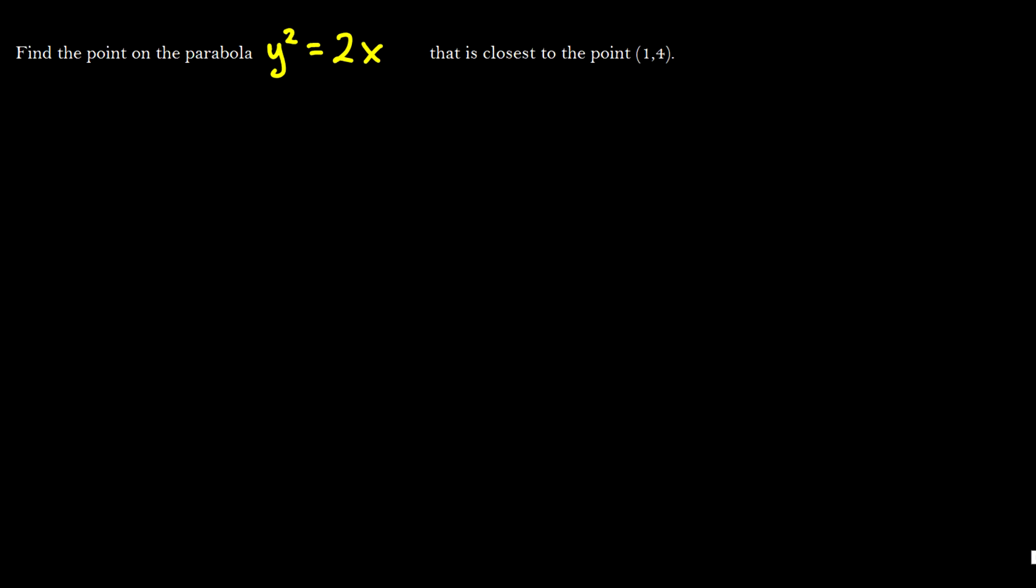One more problem that we'll do in this video is going to be a parabola question. So we need to find a point on a parabola that is closest to some other point. So what you want to do here is, essentially, when we say it's closest to the point, what we're doing is we're minimizing the distance between the curve and some other point.